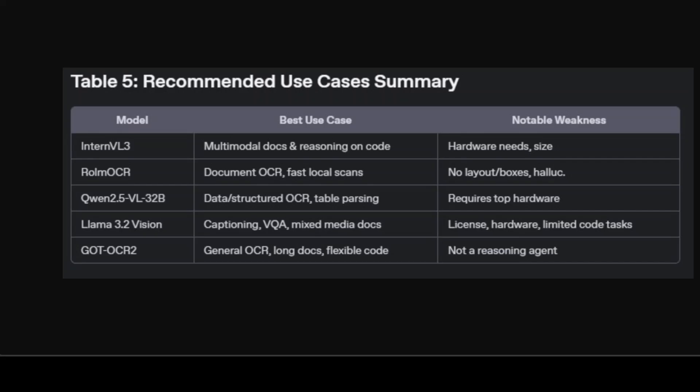Recommended use cases — and this is very subjective. If your documents mix images, formulas, and text and you need deep understanding or agentic logic, InternVL3 and Qwen 2.5 take the crown, assuming your hardware is up to it. RO LM OCR is your go-to for quick, private document scans — just text, fast and simple. Llama 3.2 Vision is flexible for content captioning and mixed modality, but with licensing and hardware limits. GOT-OCR2 is the most direct OCR tool for developers or researchers needing raw, accurate extraction with support for all sorts of document structure, but without intelligent reasoning.